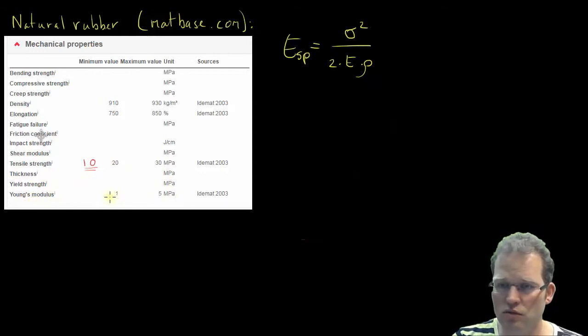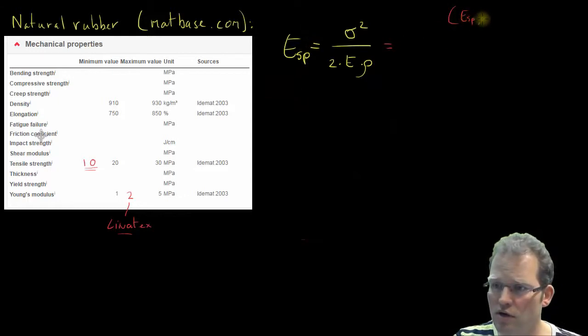Then the Young's modulus we can find, one as the minimum value, maximum value of five. I take two, it's also the number that I found at a site where they sell Linatex which is natural rubber. This number of two is a good number to take. So let's fill it in and see what happens and let's compare it to the specific energy of steel. Let's keep that in mind that the specific energy of steel was I believe 440 joules per kilogram.